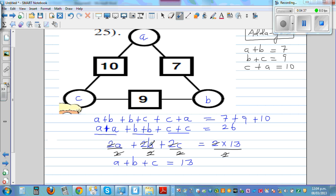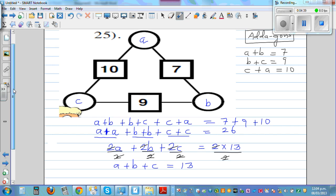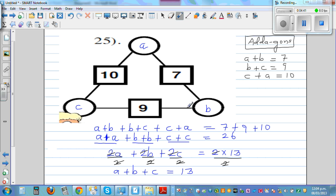If you don't want to do the whole process, the addition of 3 numbers would be the half of the addition of these numbers. So if you want to do directly this step, A plus B plus C is half of the addition of these 3 numbers. So 10 plus 7 is 17 plus 9 is 26 and half of 26 is 13.